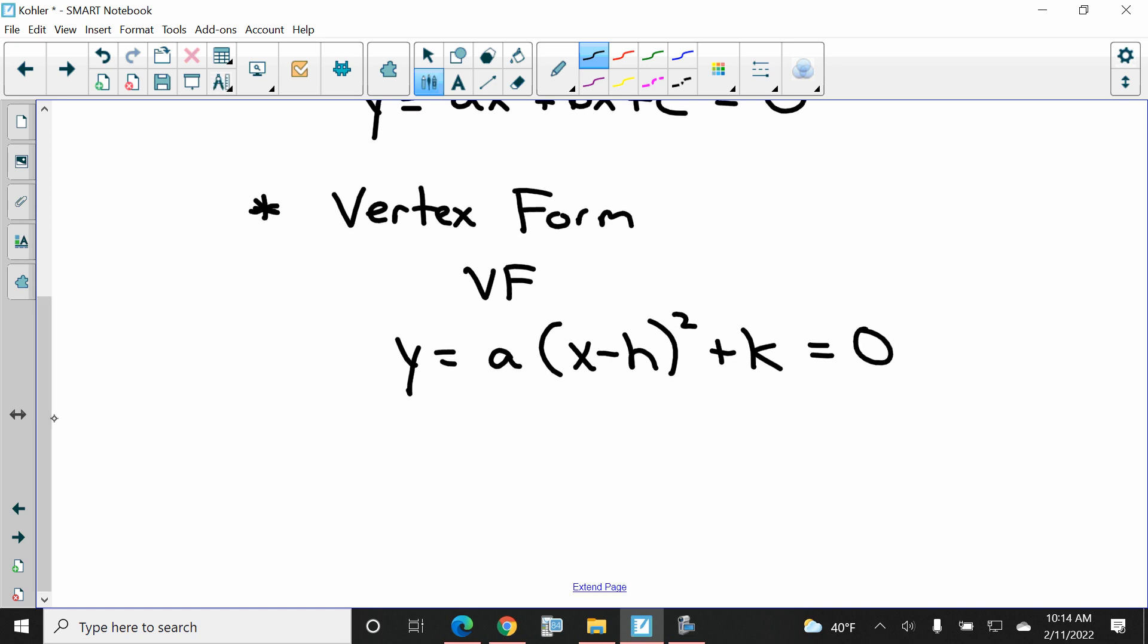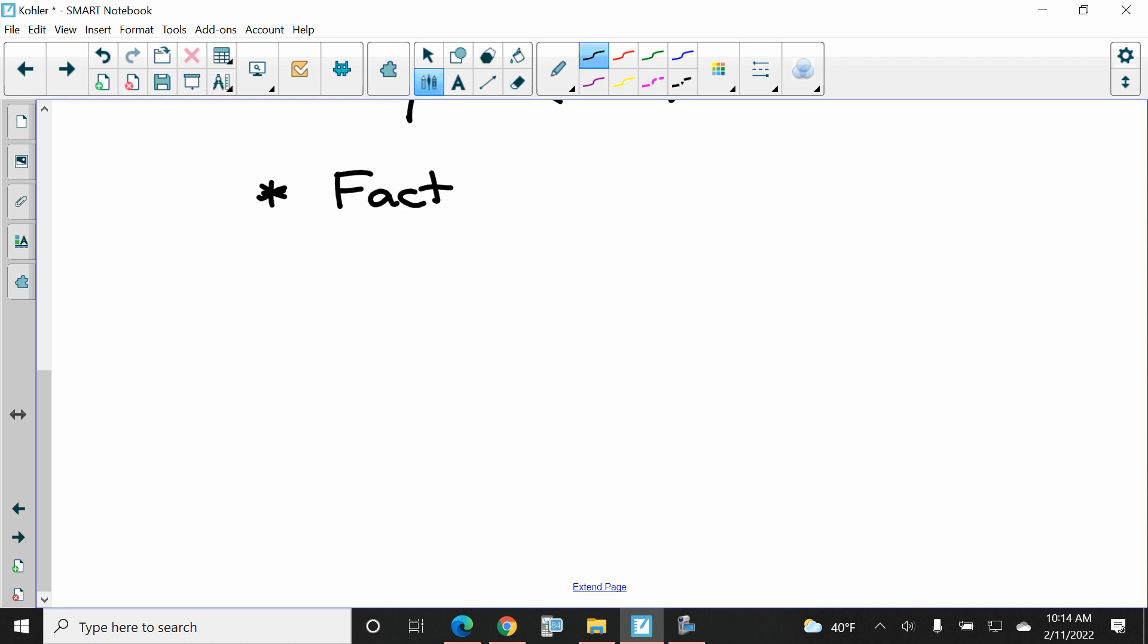And talking about solving, I want to see it solved three different ways. So the three ways are solved by factoring. And I'll just abbreviate that with an F when I go to do the work. I want to see it solved by completing the square.